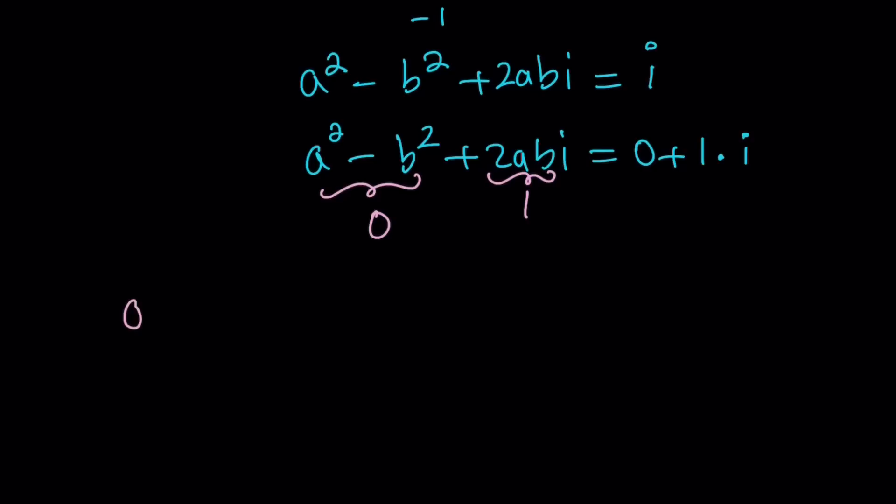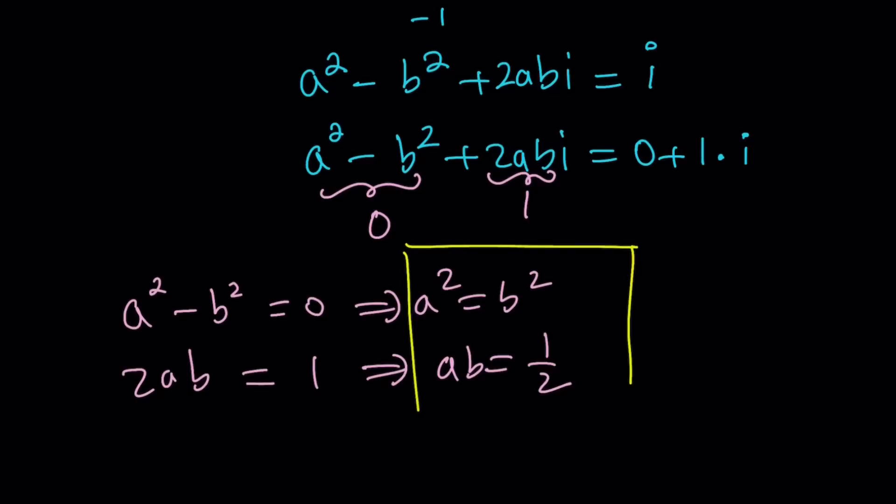Make sense? So from here, we get the following: a squared minus b squared equals 0, which implies a squared equals b squared. And we also get 2ab equals 1, which implies ab equals 1 half. So we got ourselves a system of equations, which should be fairly easy to solve.